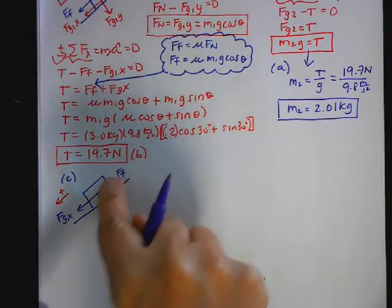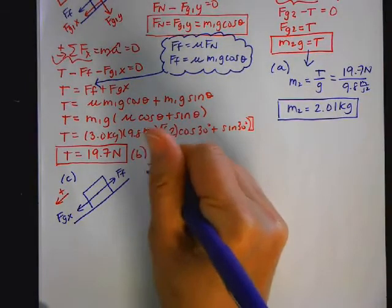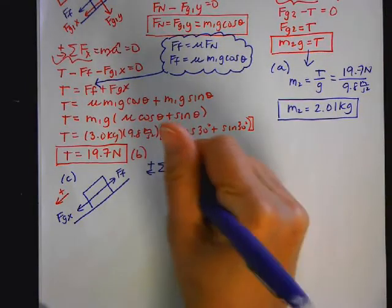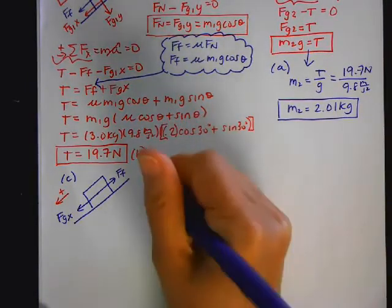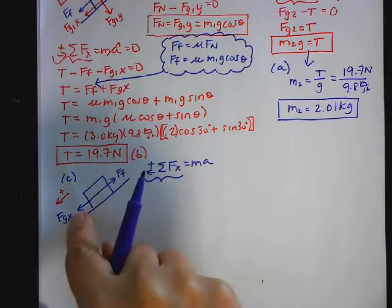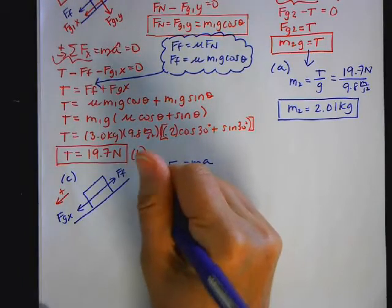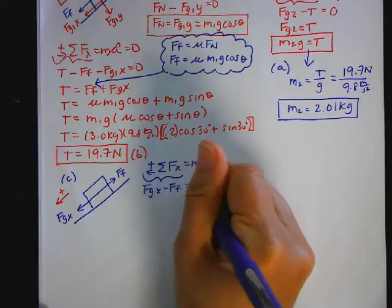So I'm going to, again, to the left is positive, so I'm going to first show my sign convention. I'm going to say summation of FX is equal to MA. I'm going to look at my forces, so FGX is positive, because that's according to my sign convention, minus FF is equal to MA.